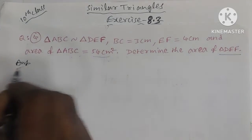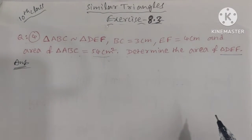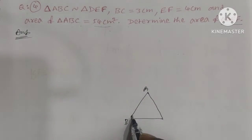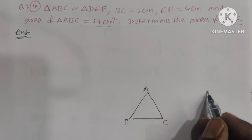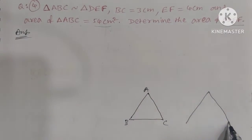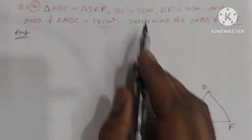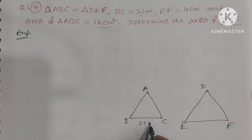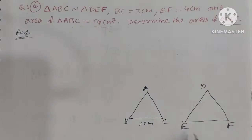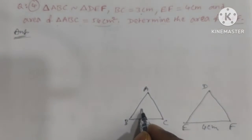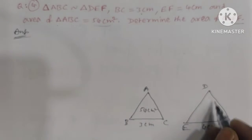First, we draw two triangles — triangle ABC and triangle DEF. BC distance is 3 cm, EF distance is 4 cm, and area of triangle ABC is 54 cm². We need to find the area of triangle DEF.